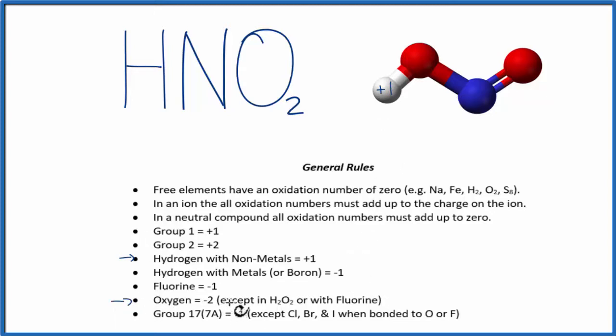Oxygen is almost always minus two with a few exceptions so each of the oxygens here has an oxidation number of minus two. We know that in a neutral compound and this is neutral because it doesn't have a plus or minus here.